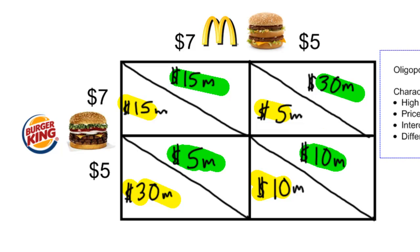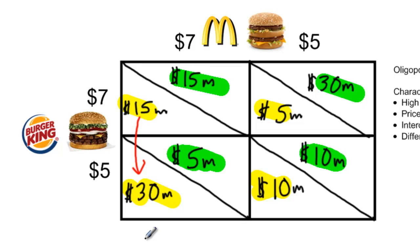Let's look at the upper left-hand corner. Assume both firms are currently selling their hamburger meals at seven dollars apiece and both firms are enjoying high economic profits of fifteen million dollars. The question is: will Burger King wish to lower its price to five dollars? If Burger King lowers its price and McDonald's keeps its price high, Burger King can expect to go from earning fifteen million dollars to earning thirty million dollars — clearly a strategy that is in Burger King's best interest.